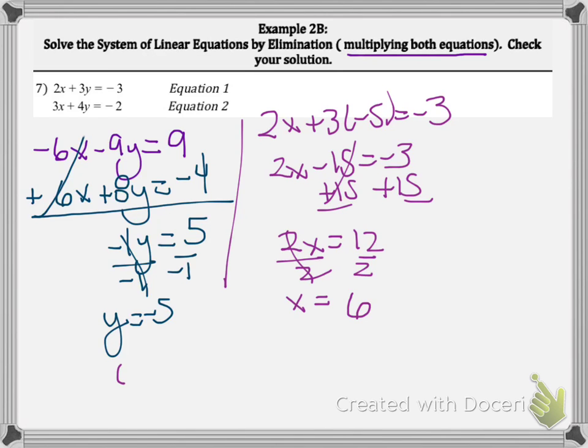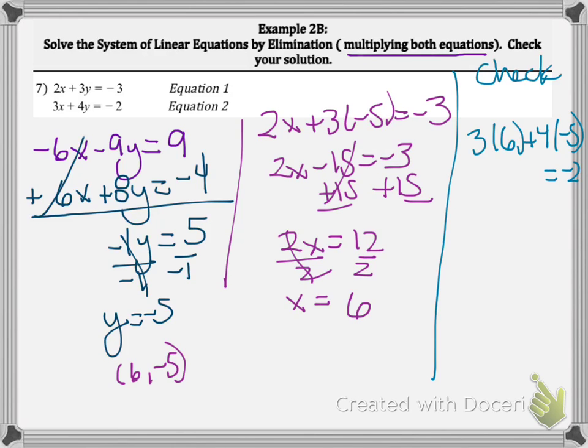We get 6 comma negative 5. Now let's check our answers. I'll always do a check. Let's plug it into the bottom one first: 3 times 6 plus 4 times negative 5. Is that going to equal negative 2? 6 times 3 is 18 minus 20. Does that equal negative 2? 18 minus 20 is negative 2, so negative 2 equals negative 2. This is true. So far, looking good.